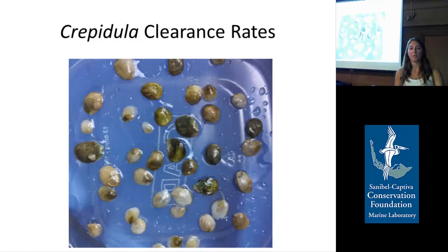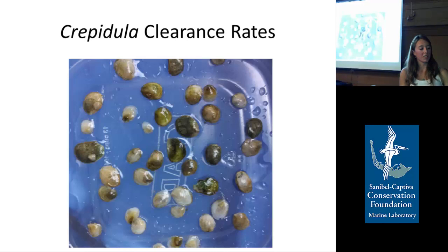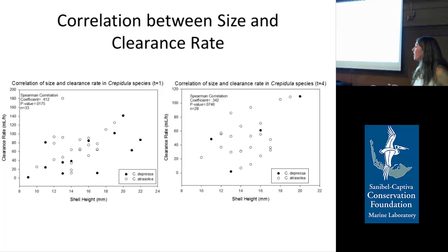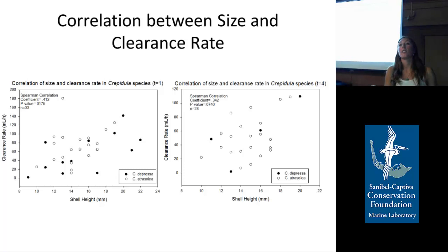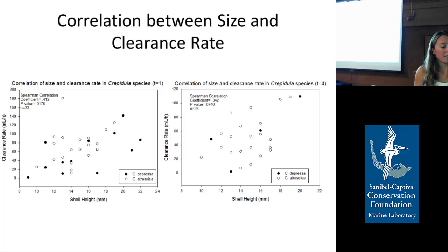I used two species of Crepidula and found no significant difference between their clearance rates, so I pooled them together. The first finding was that clearance rate — how much water they cleared in milliliters per hour — was correlated to their shell height: smaller individuals couldn't clear as much as larger individuals. This is pretty standard for filter feeders. I measured this at one hour and at four hours.